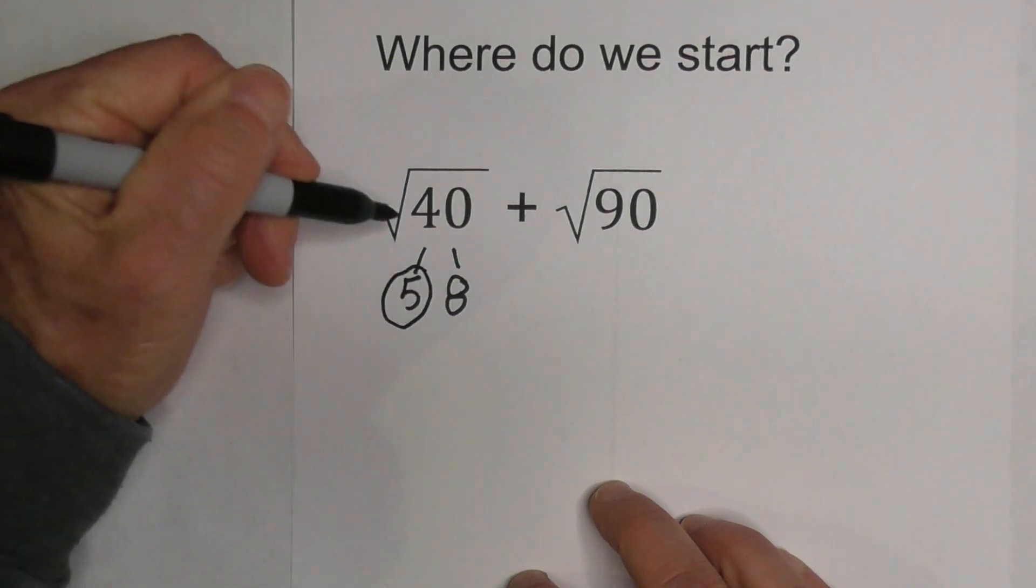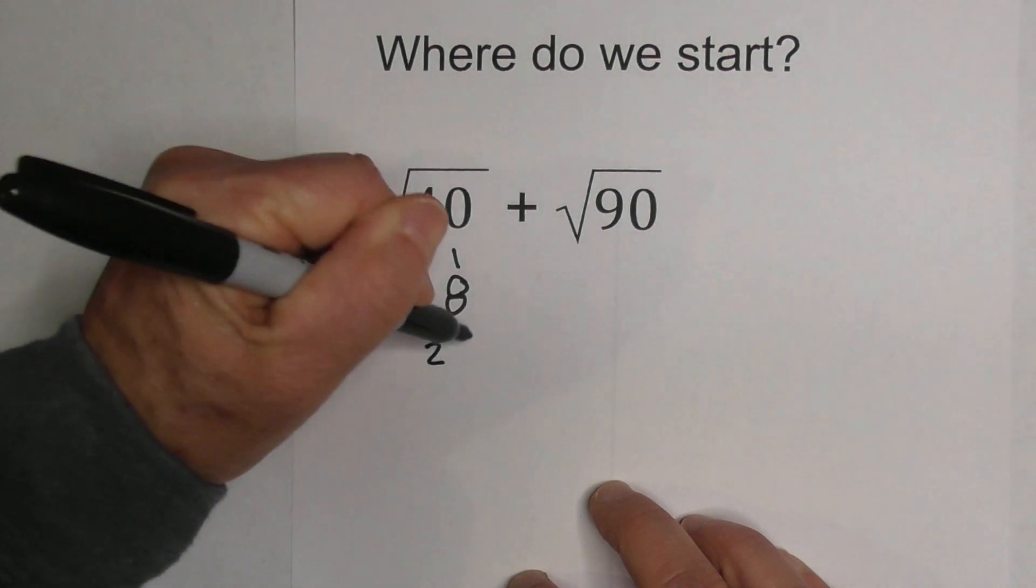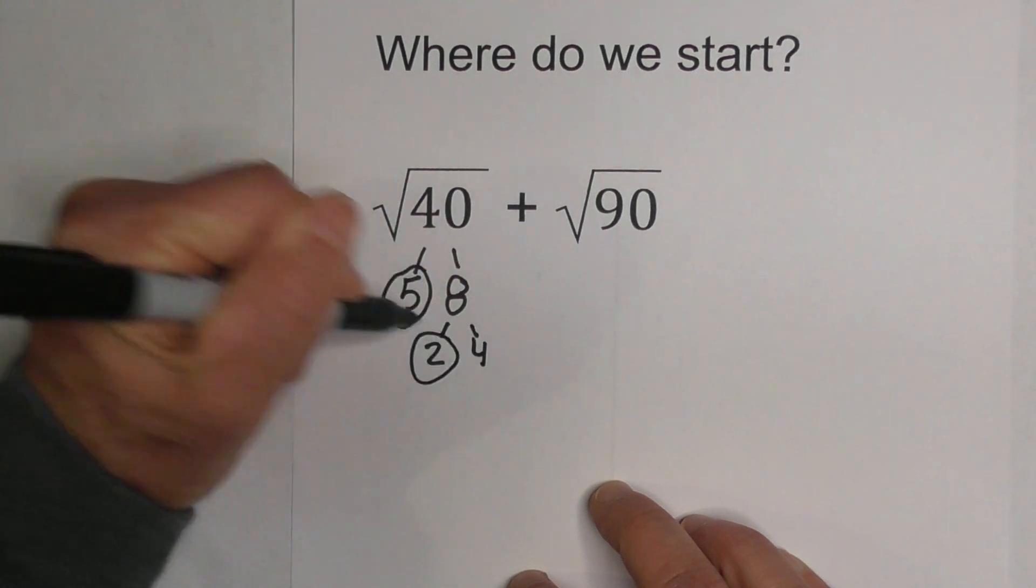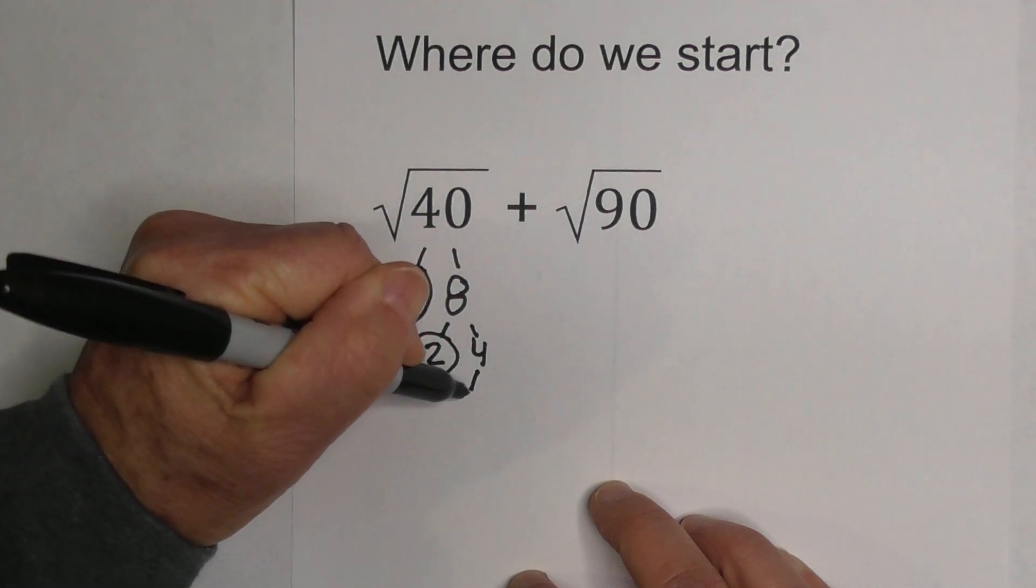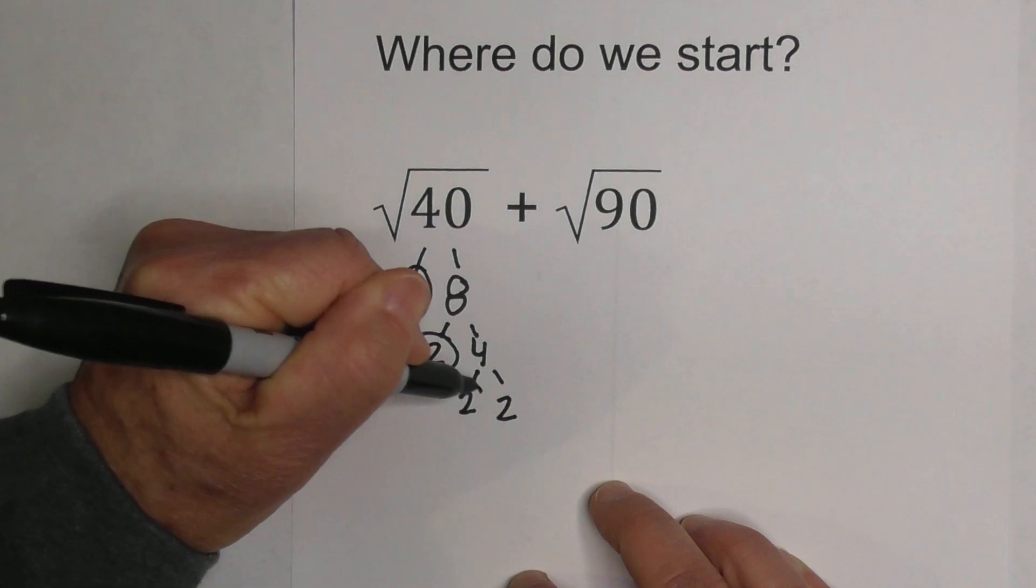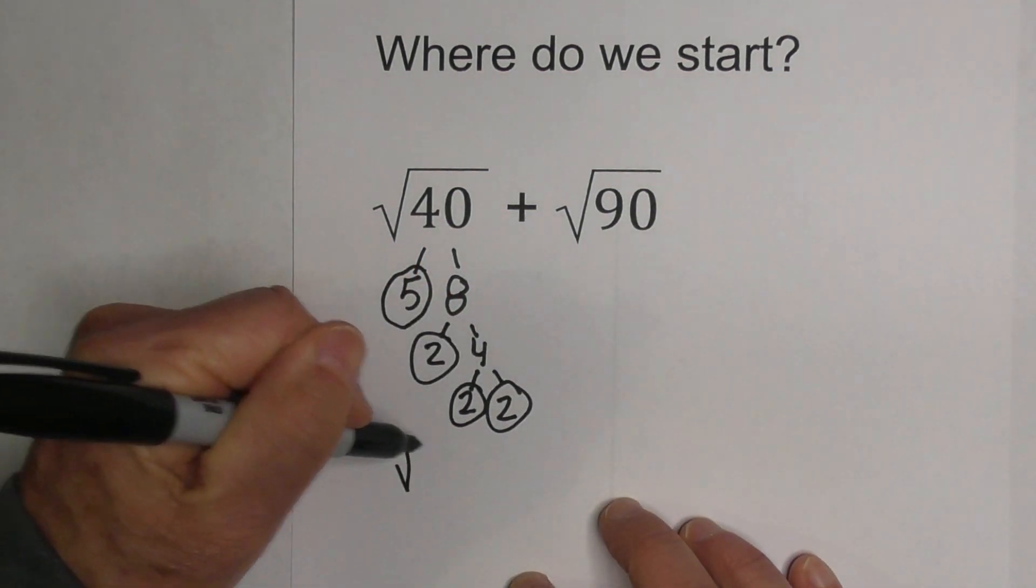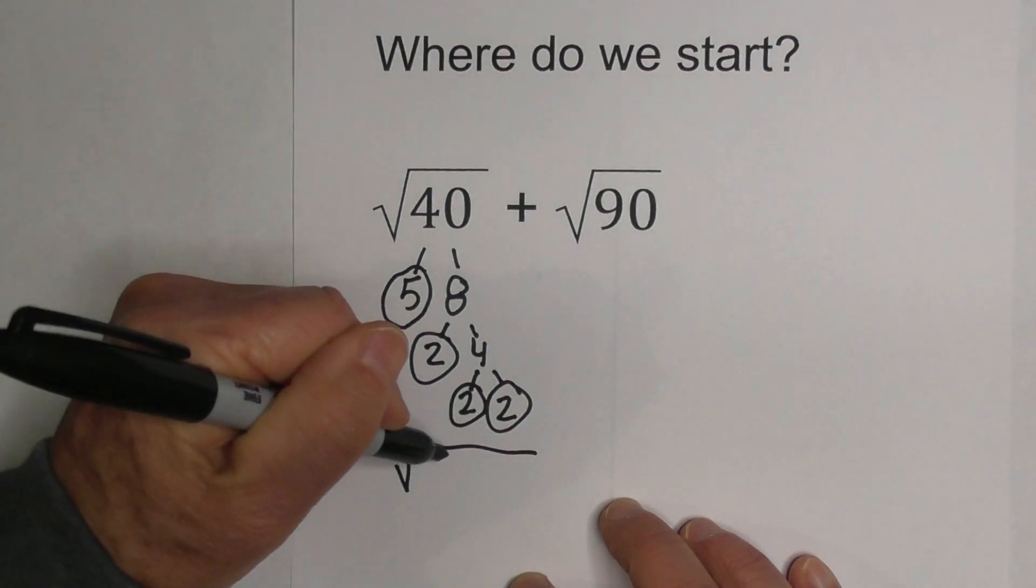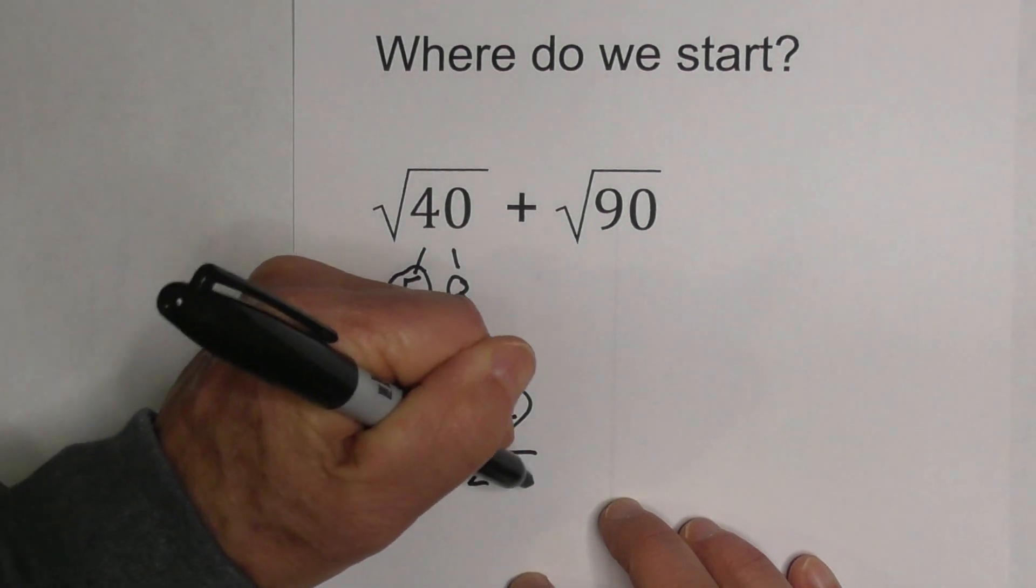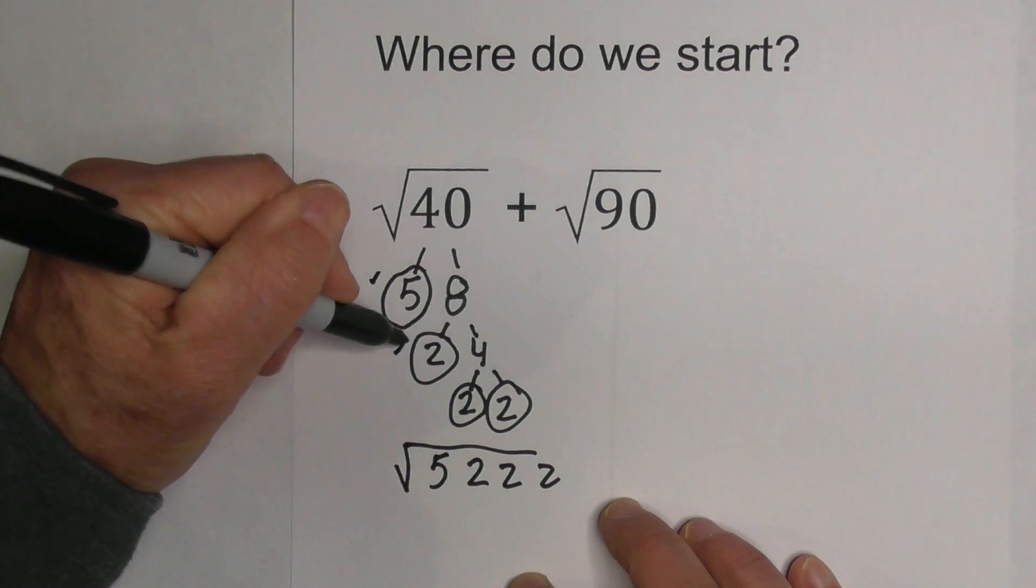Then I circle the prime numbers. Now I know that 2 times 4 equals 8, circle the 2 because it's prime, and then I have 2 times 2 is 4. So I'm down to prime numbers.